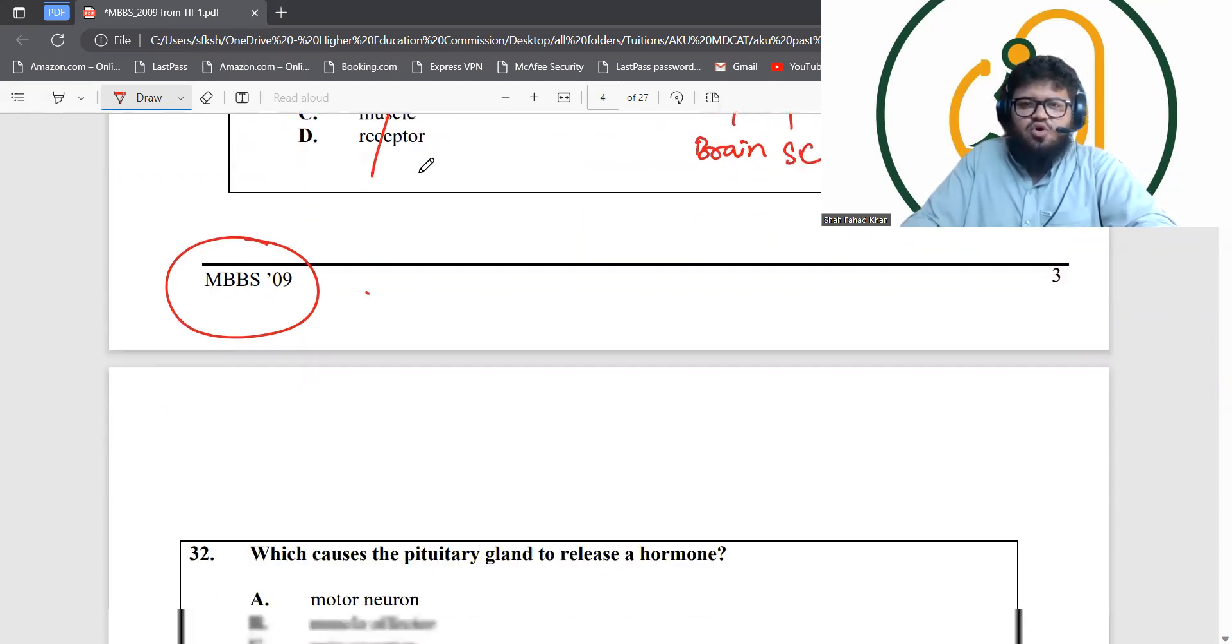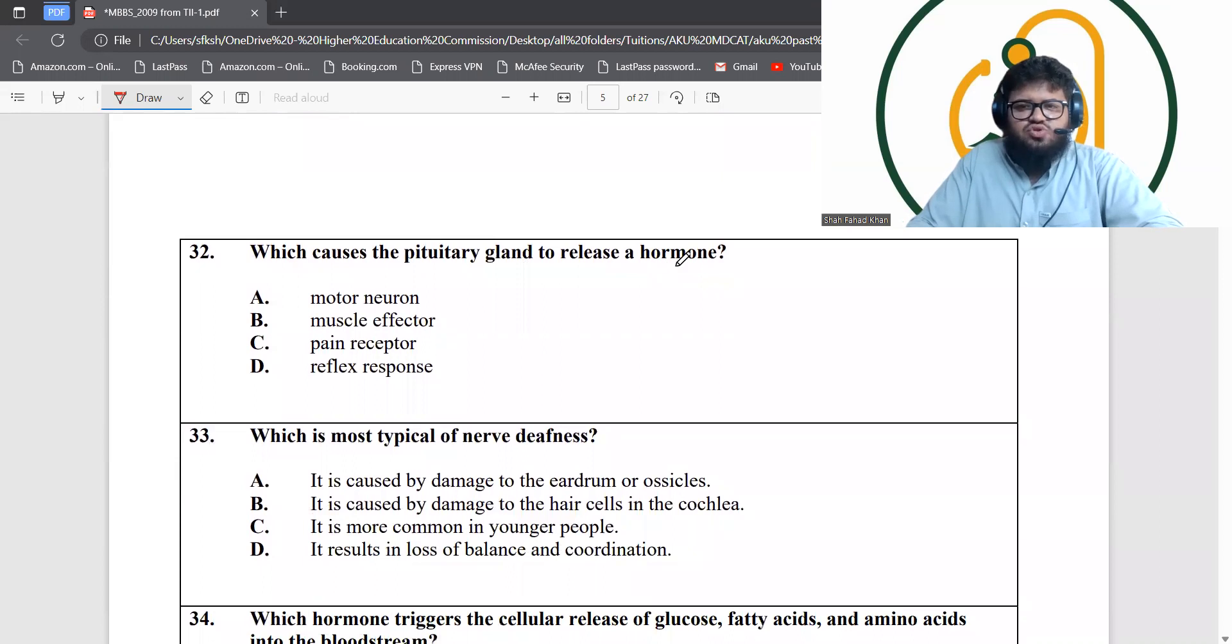What causes the pituitary glands to release hormone? Hormone releasing is actually a response towards something. Pituitary gland is a master gland of the body and master gland controller is hypothalamus. Hypothalamus is going to release some hormones to make the pituitary release hormones. Why would it do that? Because it would have sensed some homeostatic imbalance in the body.